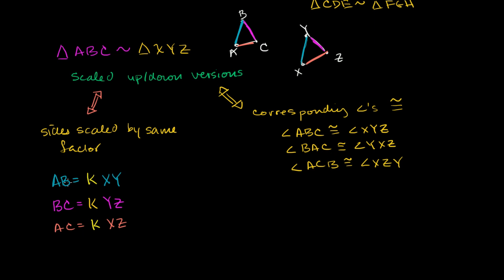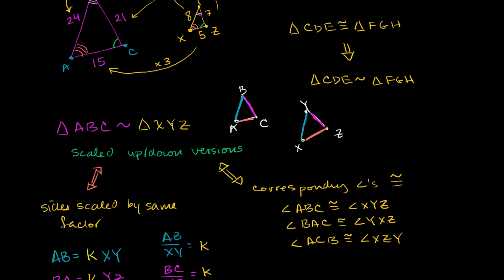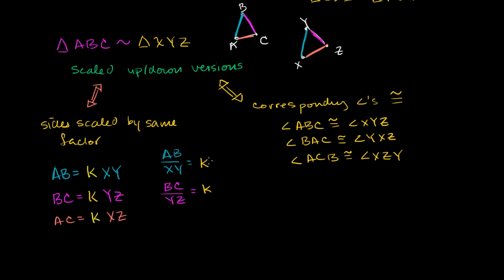Another way to write the same statements: dividing both sides by xy gives ab/xy equals the scaling factor; dividing by yz gives bc/yz equals that same scaling factor; and dividing by xz gives ac/xz equals k as well. So the ratio between corresponding sides all gives the same constant.